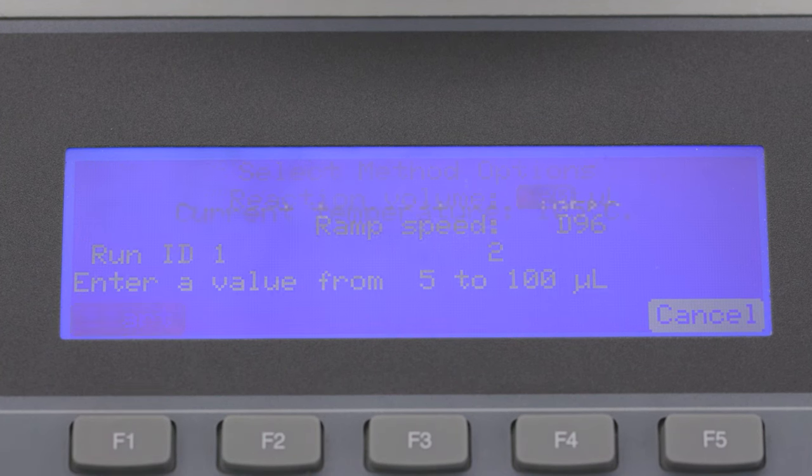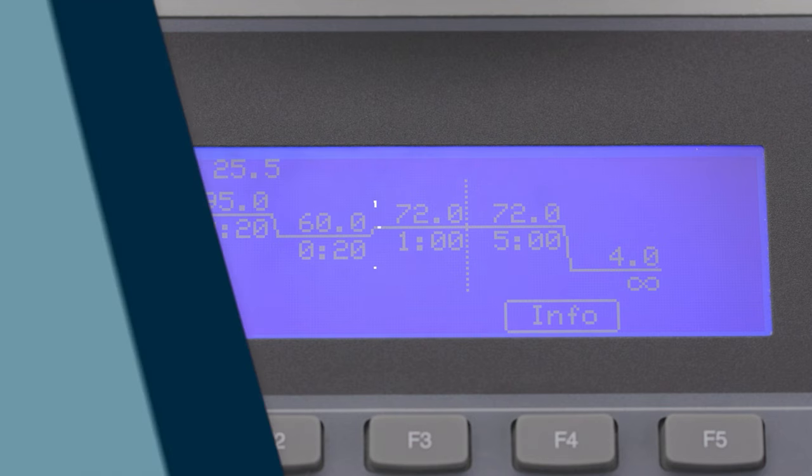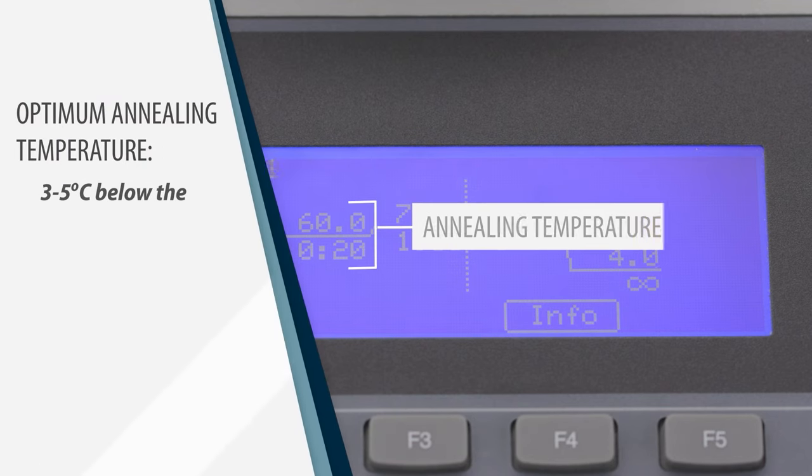Selection of the annealing temperature is critical. Typically, the optimum annealing temperature is 3 to 5 degrees Celsius below the melting temperature.